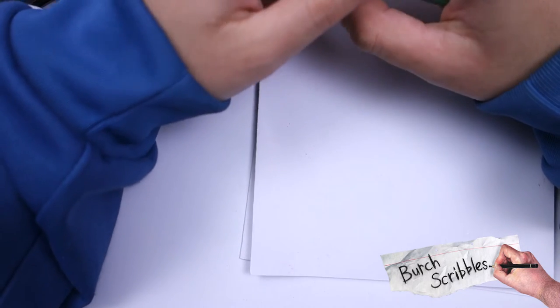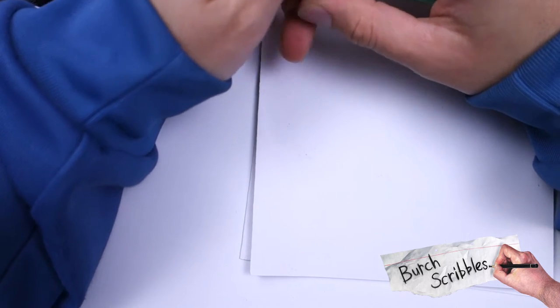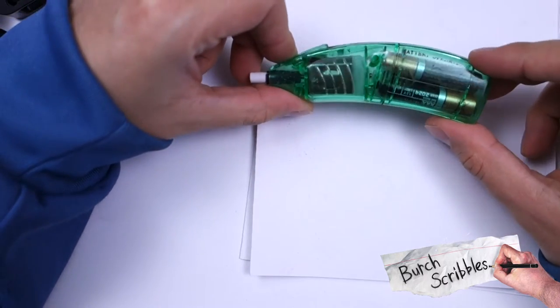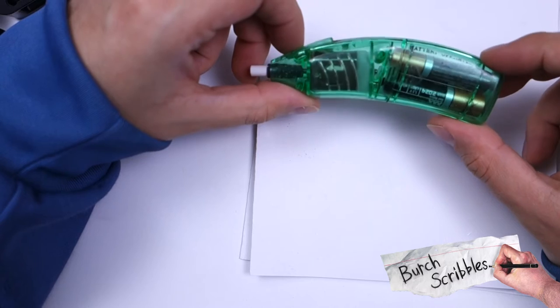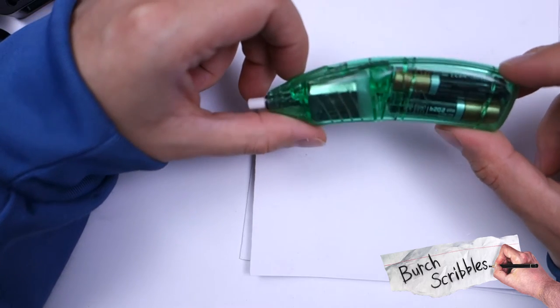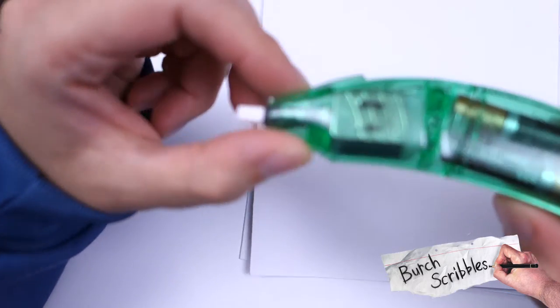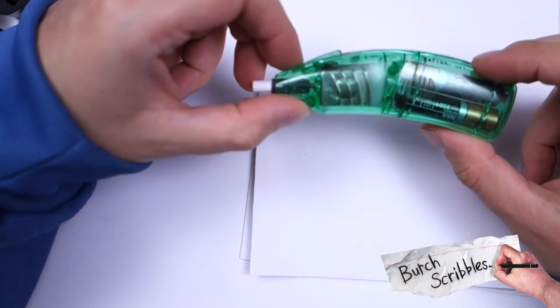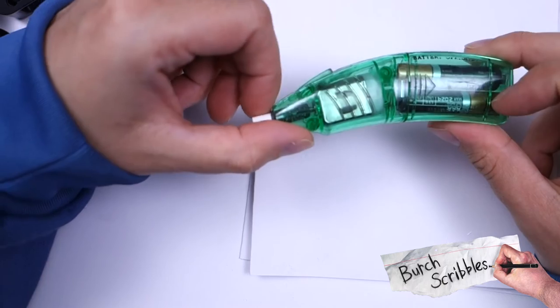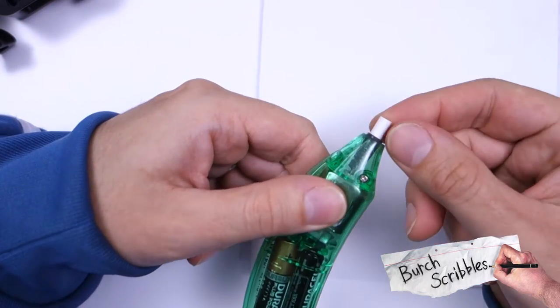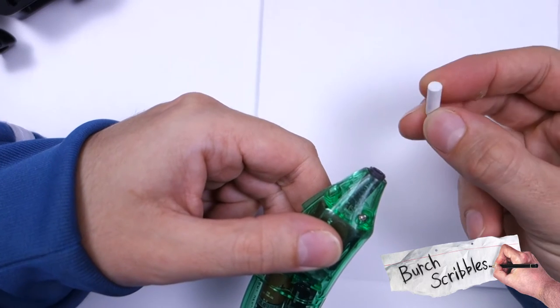So electric erasers - what is an electric eraser? Well this is one, it's called a Jakar battery operated electric eraser. You can see it's got a little motor there and it takes two AAA batteries and it takes these little eraser refills.